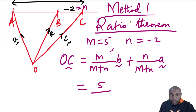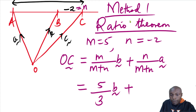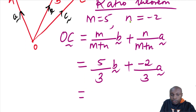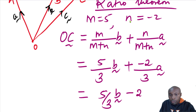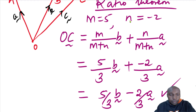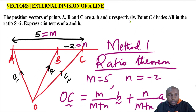Substituting the values: m is 5, m plus n is 5 plus negative 2 which equals 3. So we get 5 over 3 times b, plus negative 2 over 3 times a. Simplifying, this gives five-thirds b minus two-thirds a. That is how we express point C in terms of a and b using Method 1.